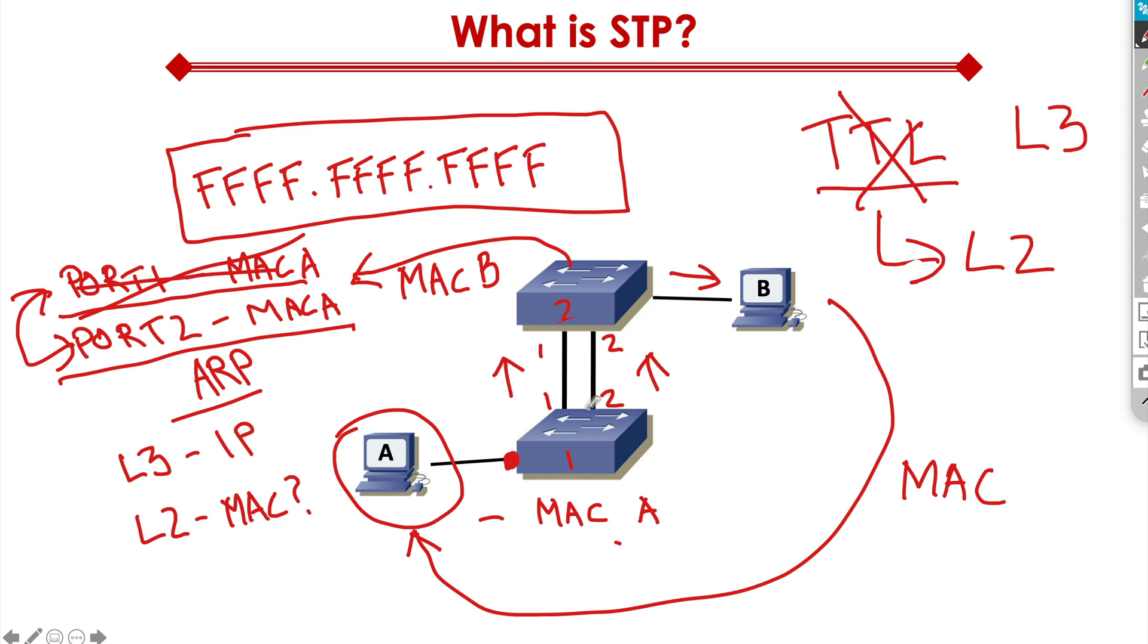And finally, because we have these redundant ports and multiple frames, the host may end up getting multiple copies of the same frame and it would cause issues. The application that host B is running might actually crash because it may not know how to handle duplicate frames. So these are the three big issues that occur in a network when there's no spanning tree running.